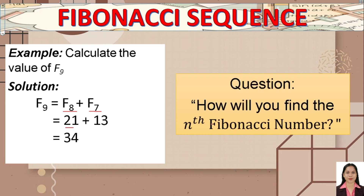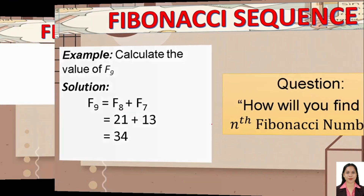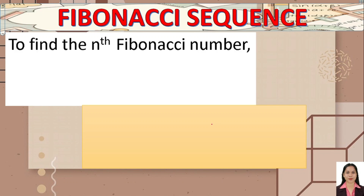So how will you find the nth Fibonacci number if n is a large number, say n equals 100? You can either add the two previous terms using the listing method, or you can use the Binet formula.